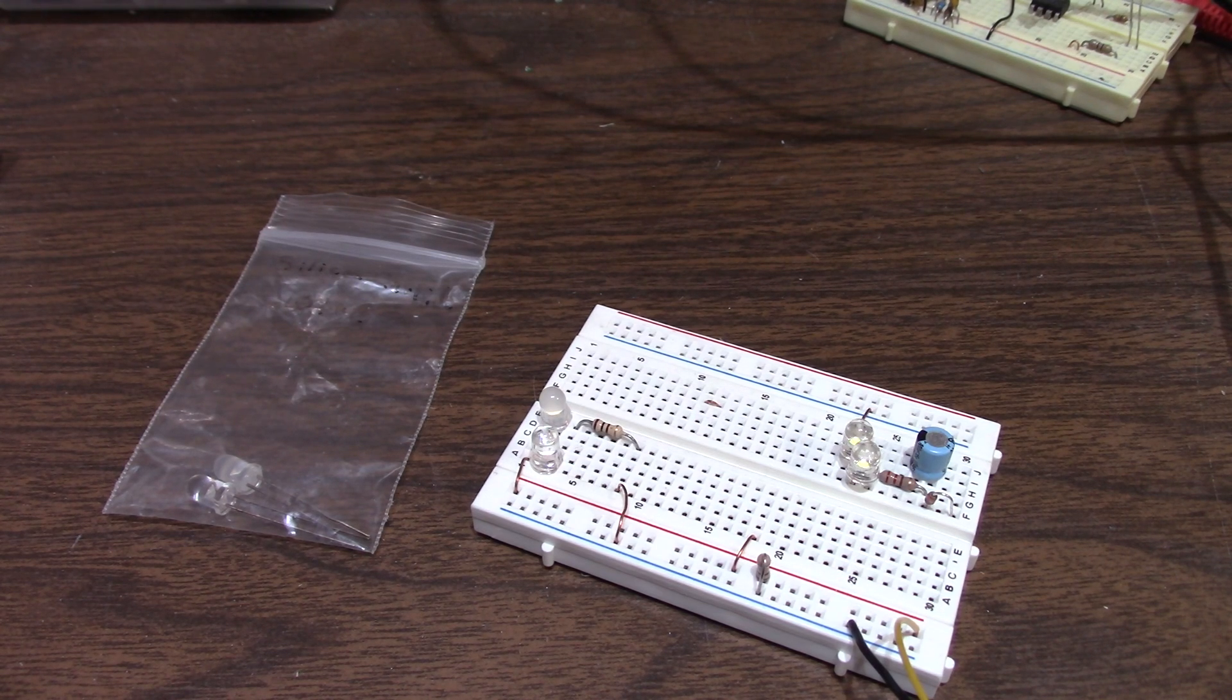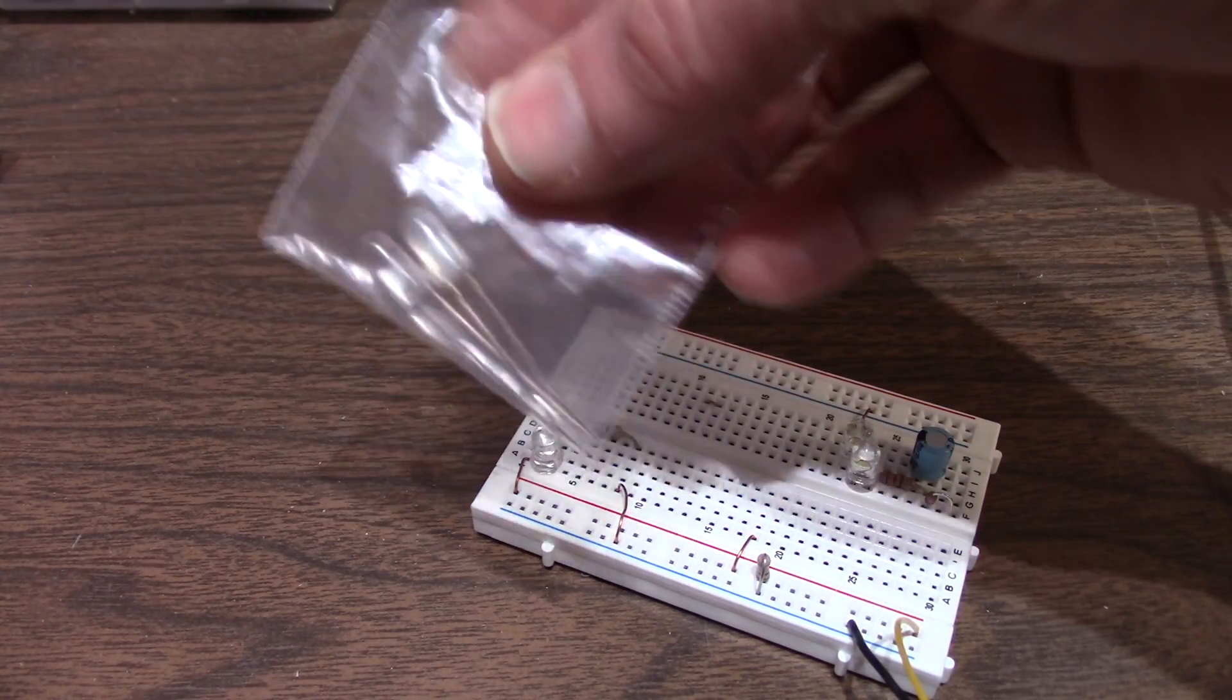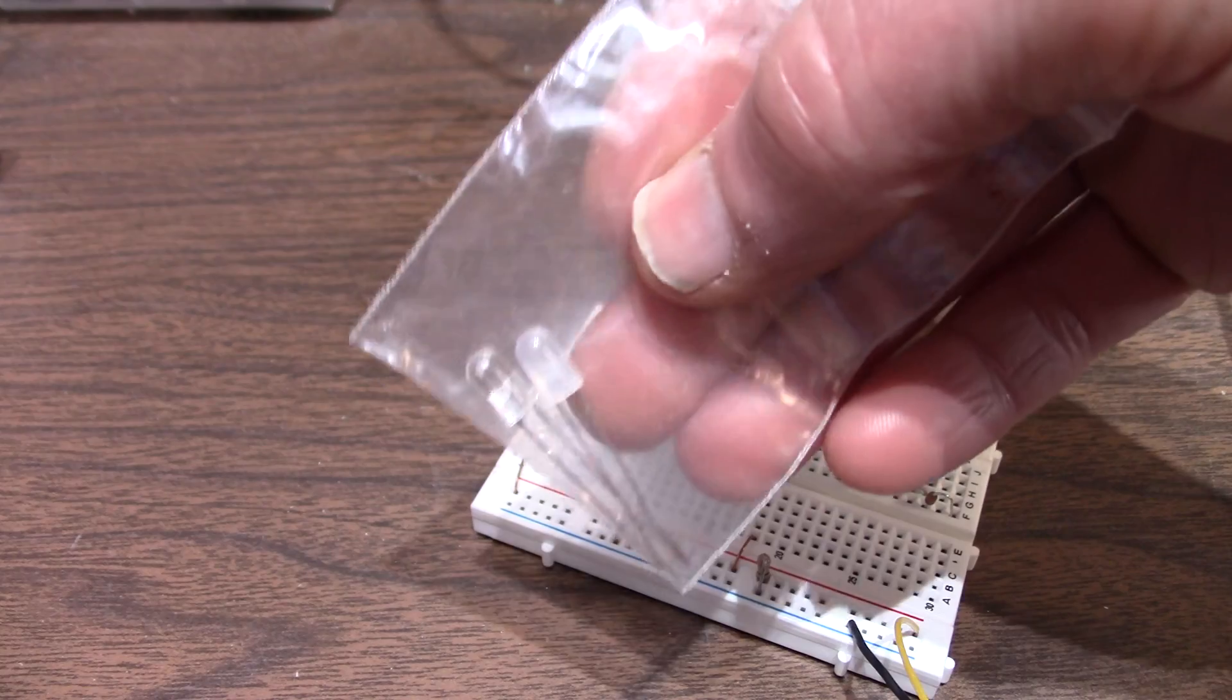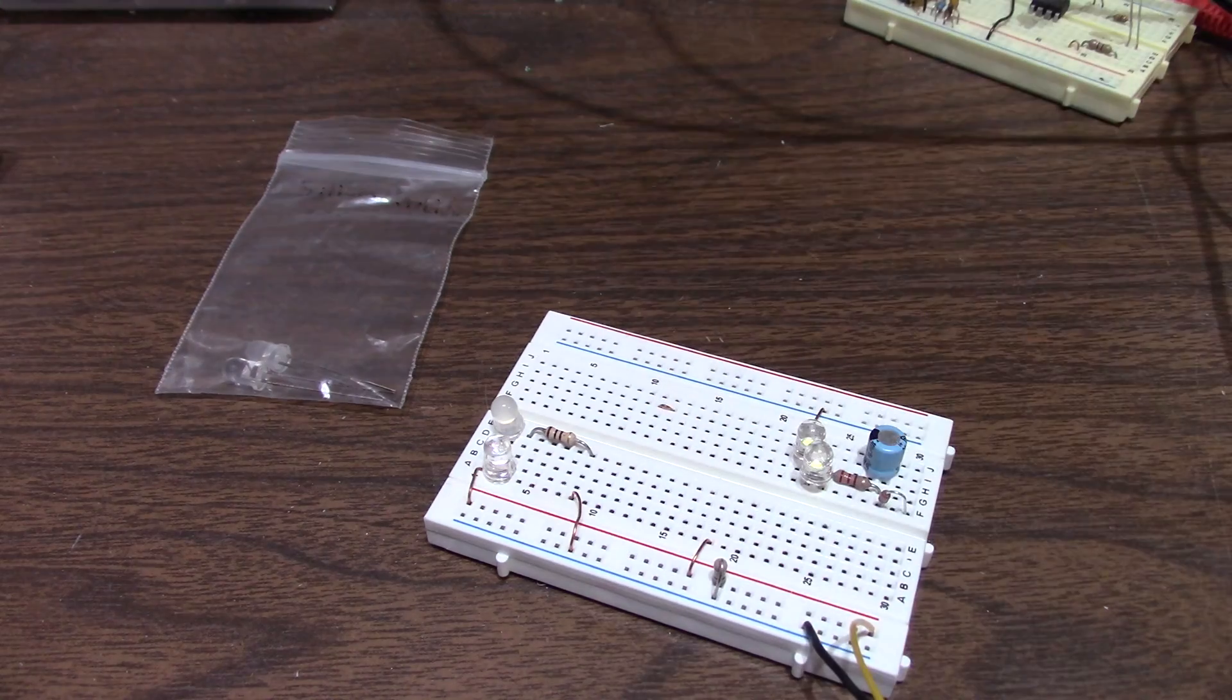They're kind of expensive, $3.50, whatever that is in today's money. Probably close to $10, but that's a lot of money for a 5mm LED. But I put in an order of four of them, and one is clear, one is diffuse-type casing. And let me fire them up.